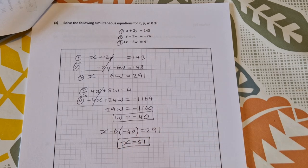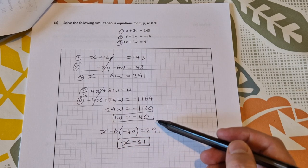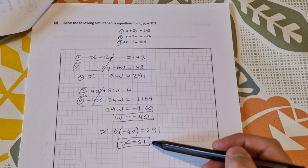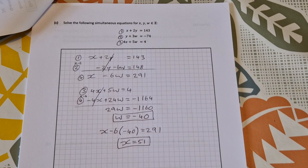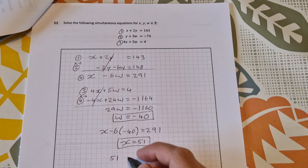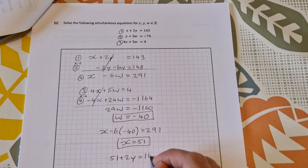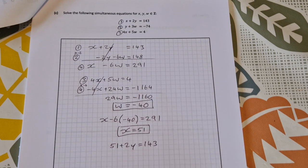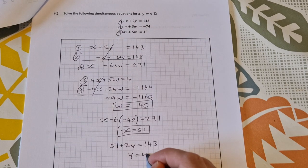So now we have x and we can sub in x equal to 51 into any of the other ones to get the y value. So 51 plus 2y is equal to 143. So that means y works out to be 46.